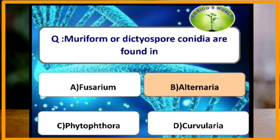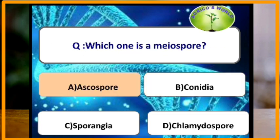Alternaria produces brown obclavate conidia with a beak; they are transversely and longitudinally septate, producing dictyospore conidia. The spore formed after meiosis is known as a meiospore — these are haploid spores. Examples include uredospores, zygospores, ascospores, and basidiospores.